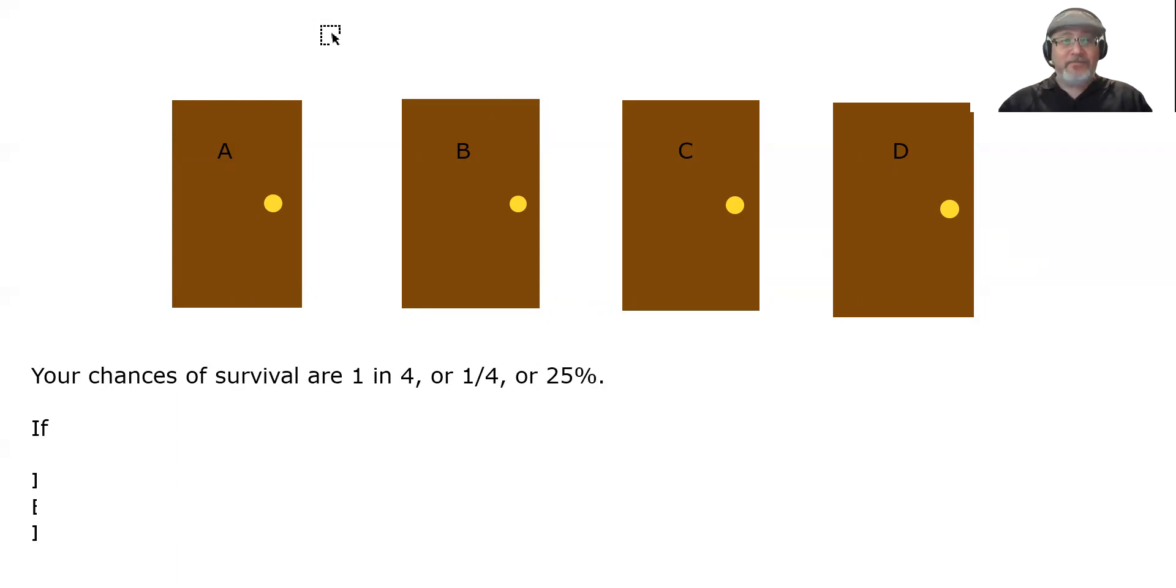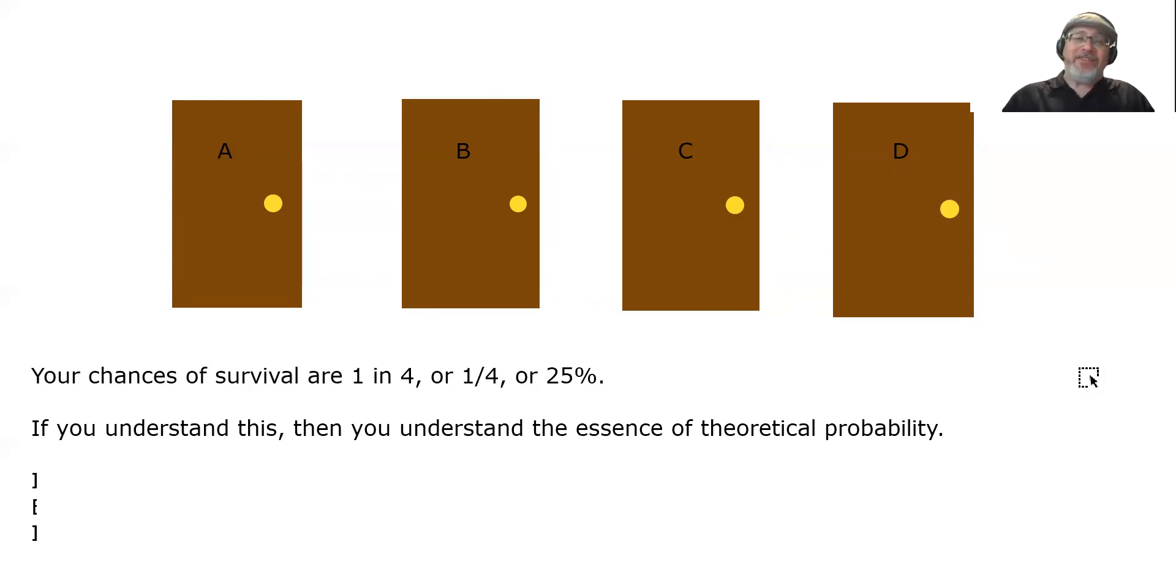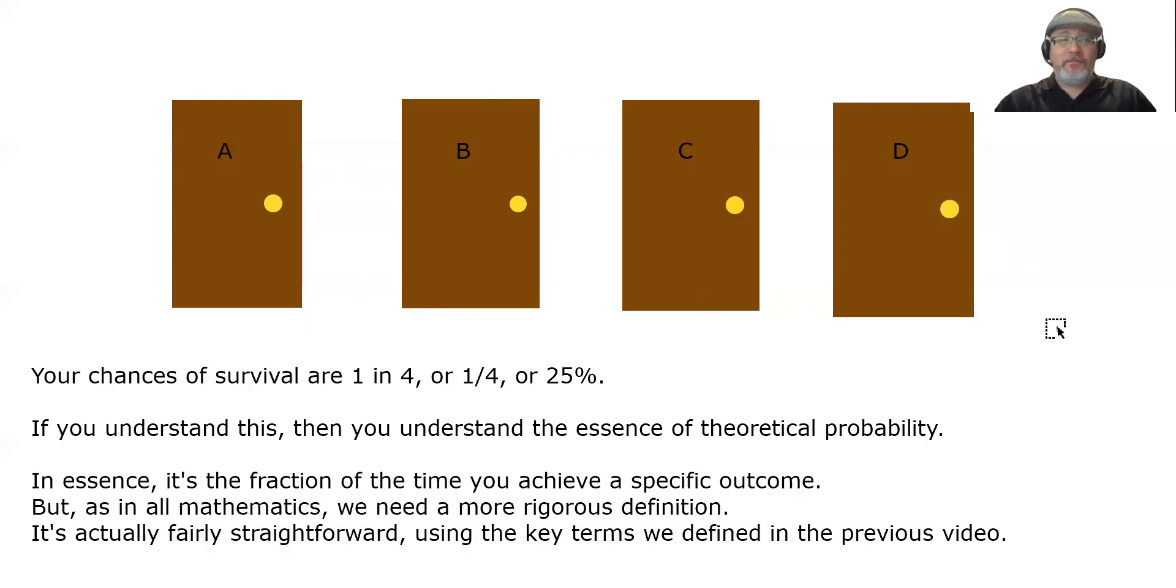So why is that? Well, it's really not that hard to see. There are four doors, and one of them is survival. So one out of four. If you understand this, then you understand the essence of theoretical probability. The essence of it is what fraction of the sample space is what we're looking for. In this case, one-fourth of the doors gives us freedom. By the way, what are your chances of not surviving? Three out of four. Remember, you have to open a door. In essence, it's the fraction of the time you achieve a specific outcome. Theoretical probability, that is.